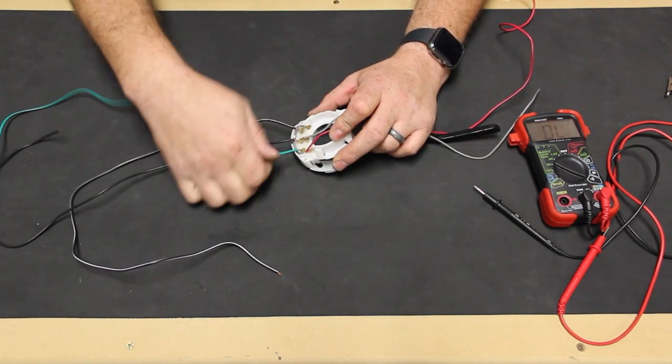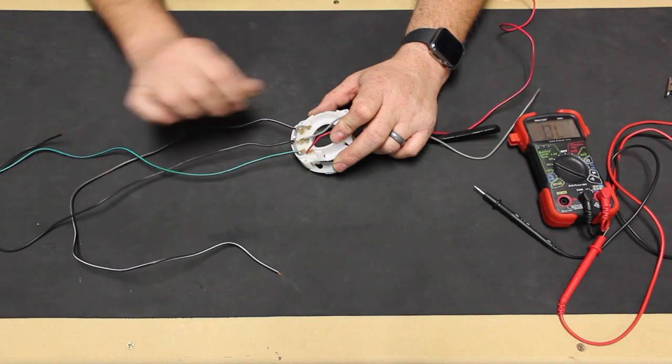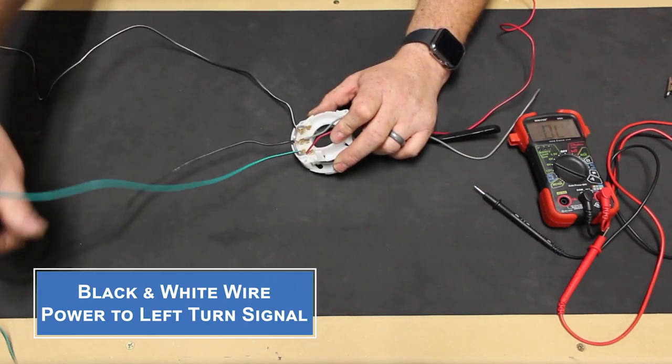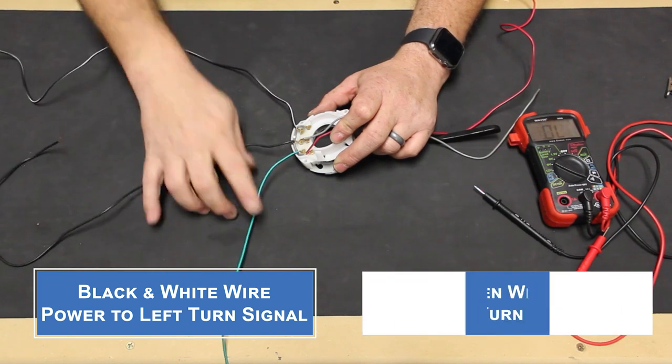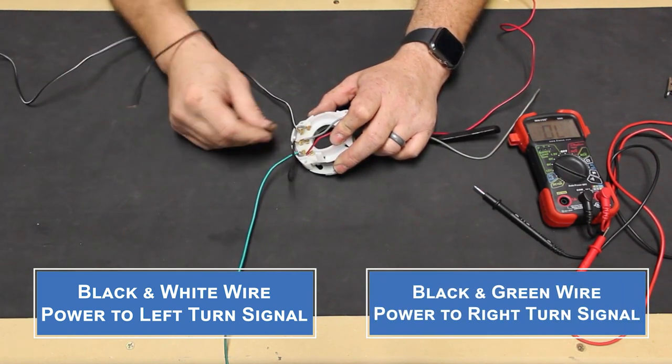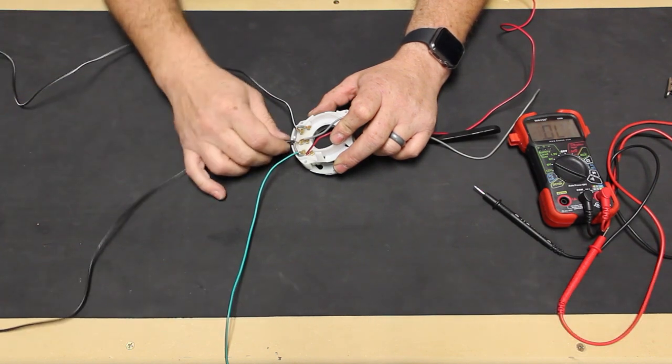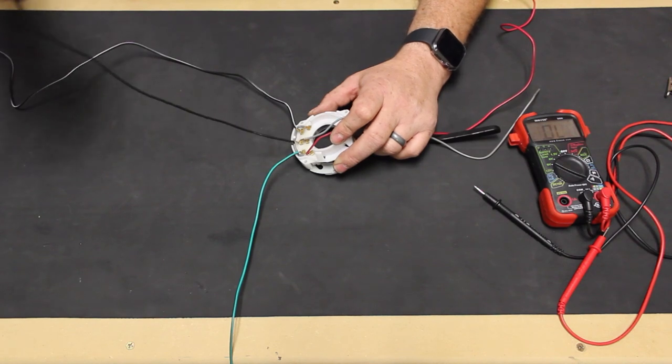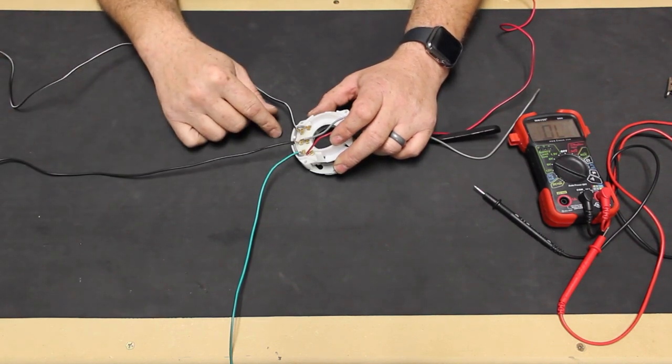We will be using the black and green, the black, and the black and white wires. The black and white left turn signal output and the black and green right turn signal output wires follow the factory color coding. The black input wire at the center is originally black, white, and green, but on most aftermarket switches, it's just going to be black.